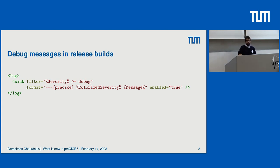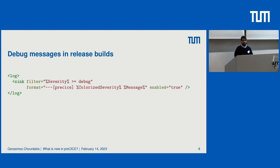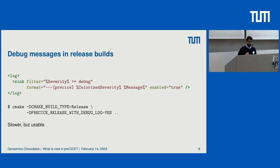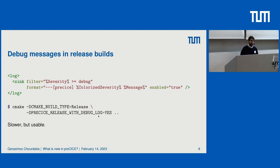Yesterday you also saw how to configure the Precise logger. Some of you had the problem that you installed the Debian package built in release mode, which did not have debug messages. However, we have now added a new option: when you build Precise, you can still build it in release mode but enable debug messages. This will be a bit slower, but not as slow as a full debug build — a nice trade-off for your laptop.